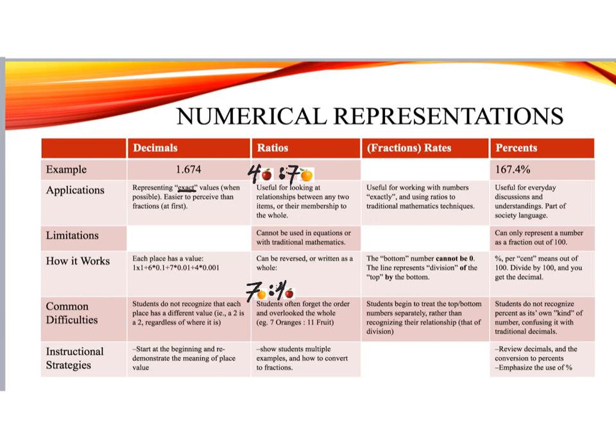1.674. Decimals are really great for representing exact values, because it's when possible, and it's easier to perceive than fractions, so often they get used for that reason. It works where each place has a value. So you see here 1 times 1, we see 6 of 0.1s, 7 of 0.01, and 4 of 0.001, or 1 one-thousandth.